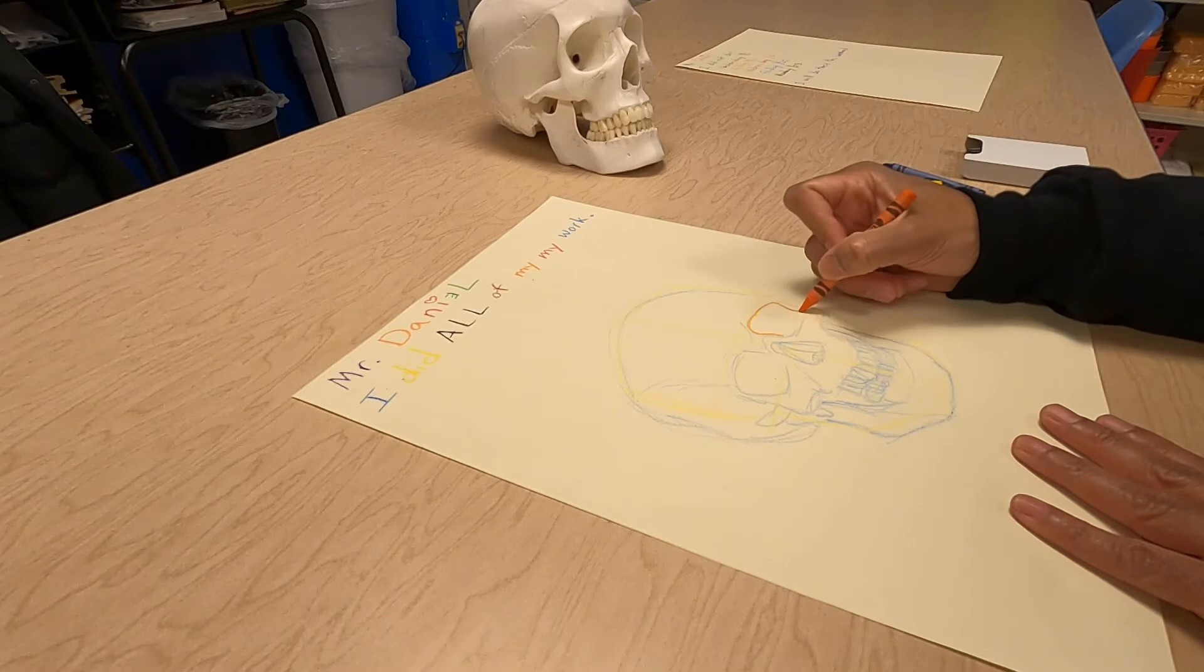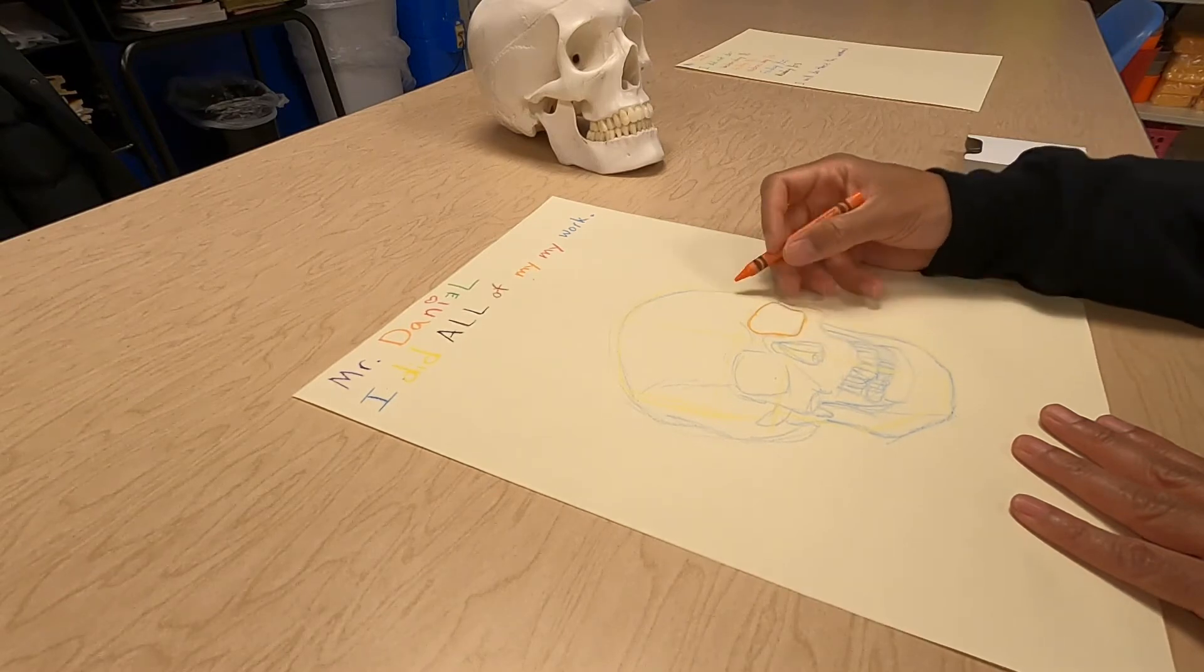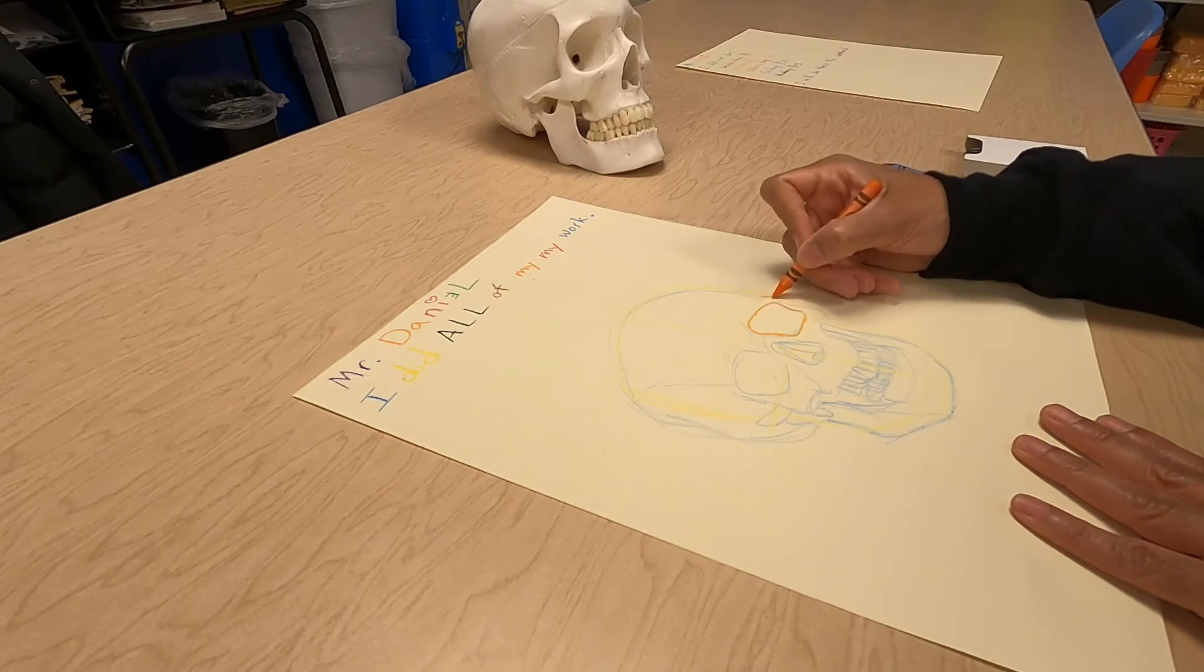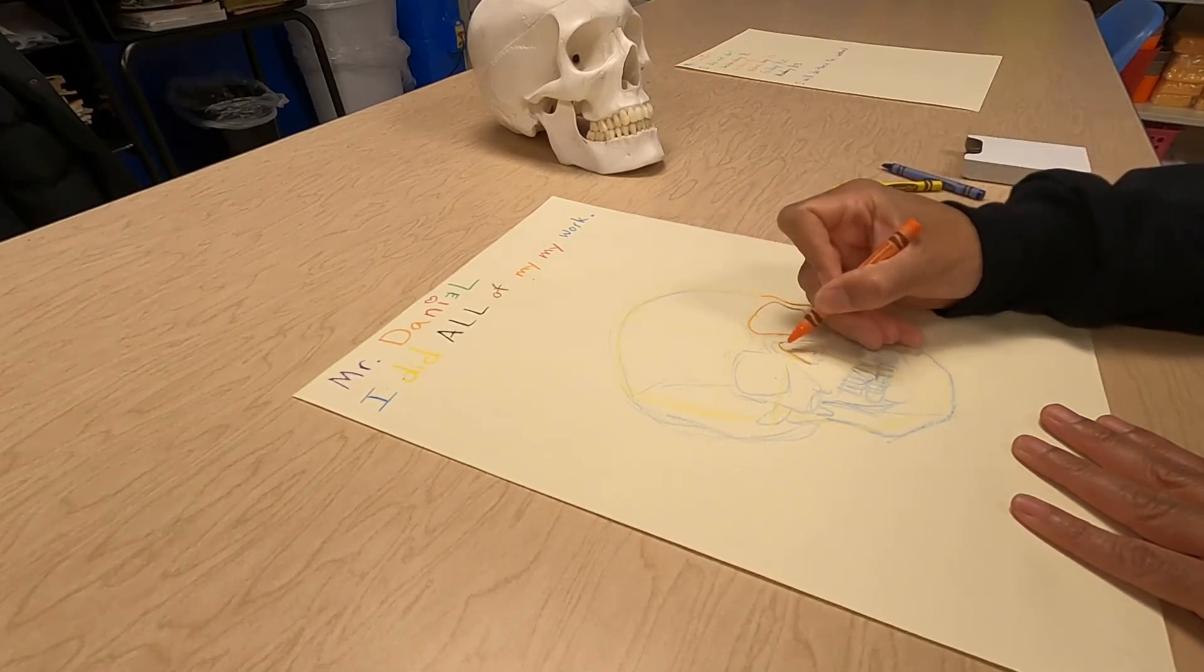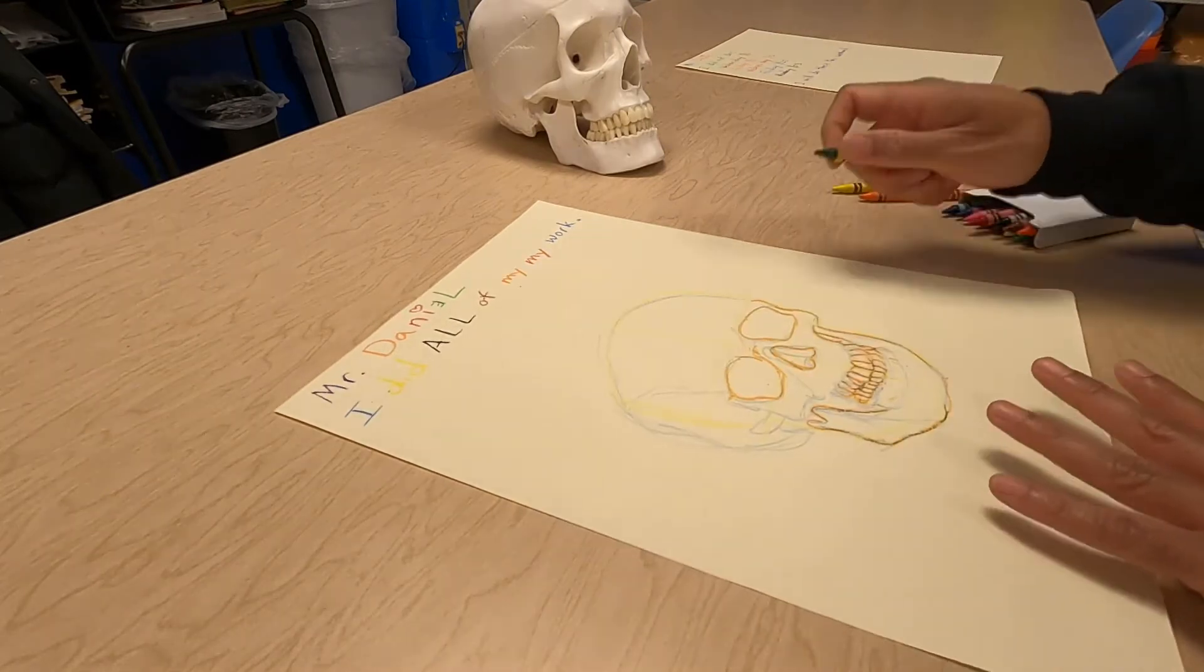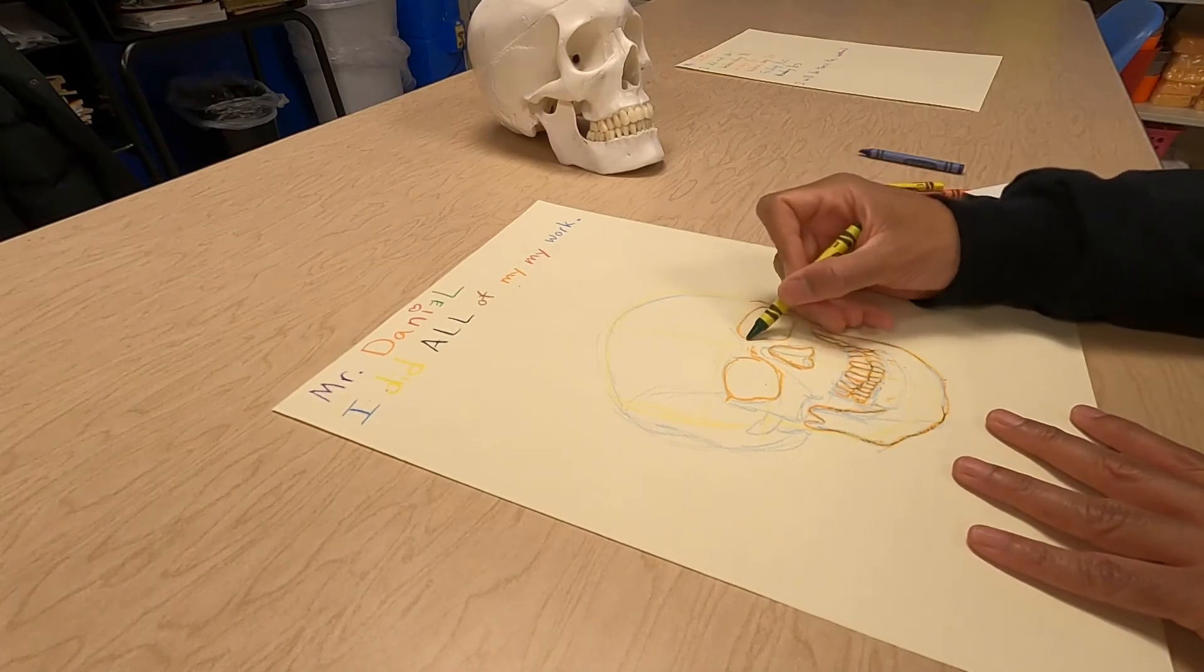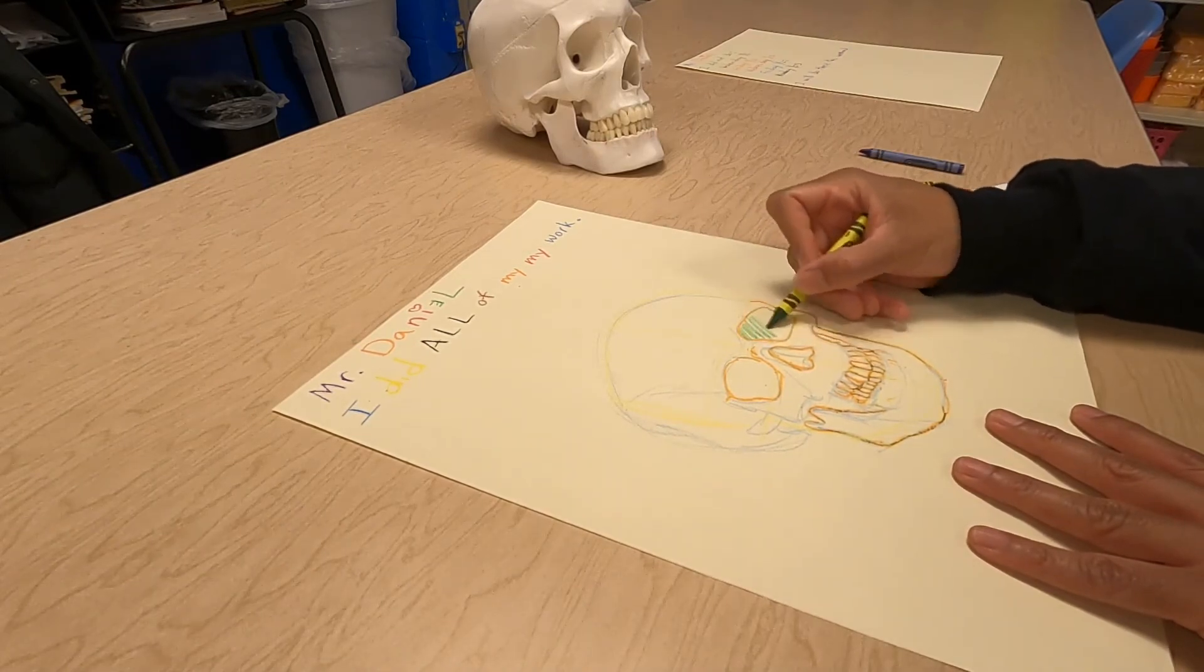Now I don't want you to spend a real long time on this drawing. For crayons, especially these school crayons, it's kind of difficult to get good details, but one thing you can do is add an interesting color scheme. I'm going to put in a bunch of different colors in this skull to make it more colorful and interesting.